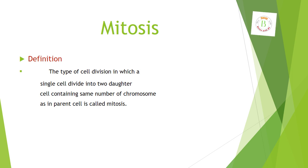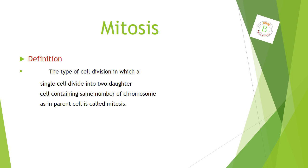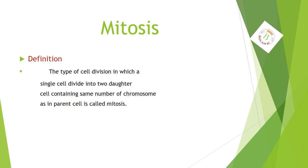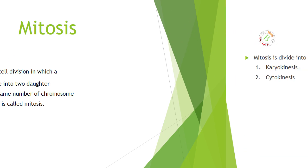Mitosis. Definition. The type of cell division in which a single cell divides into two daughter cells containing the same number of chromosomes as in the parent cell is called mitosis.